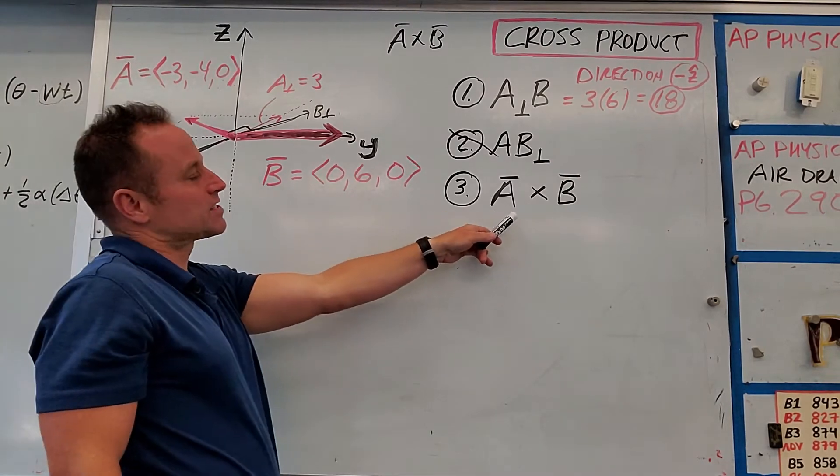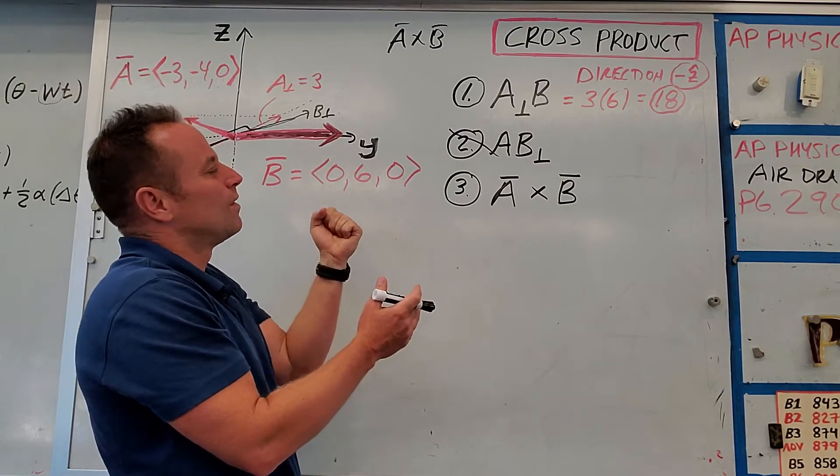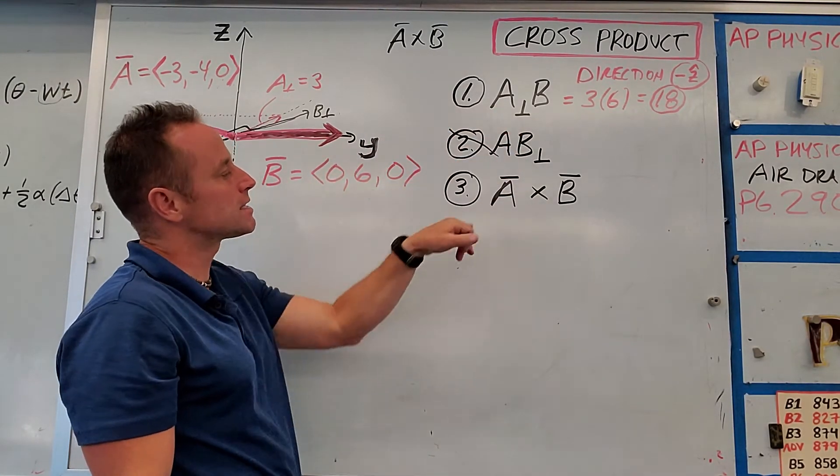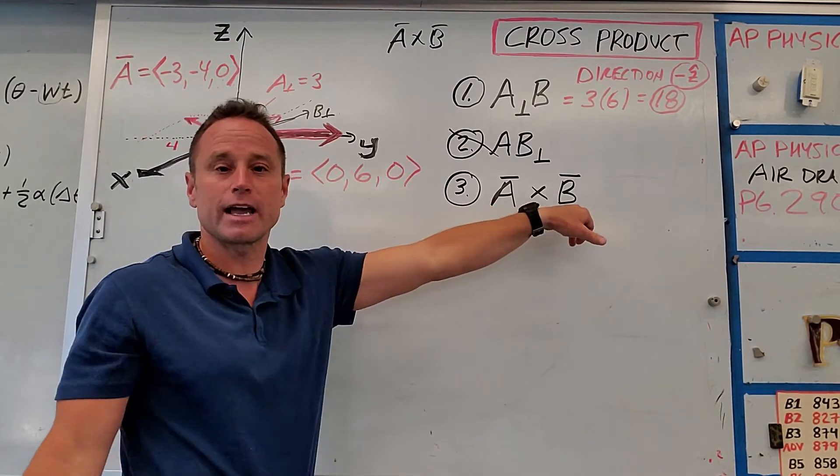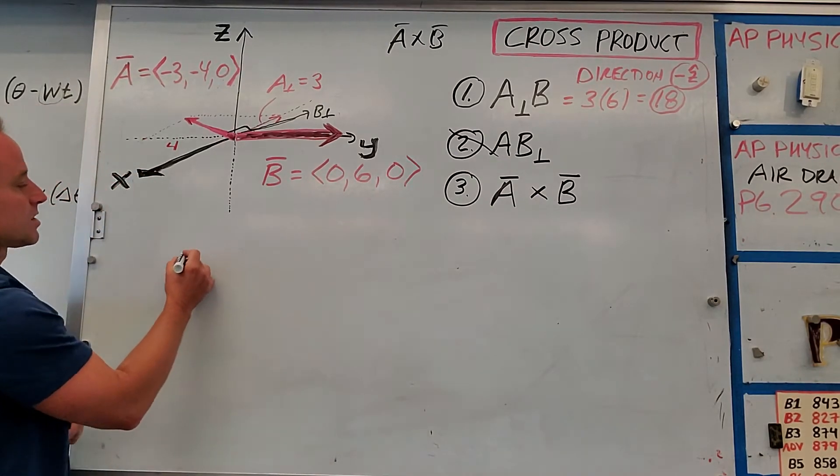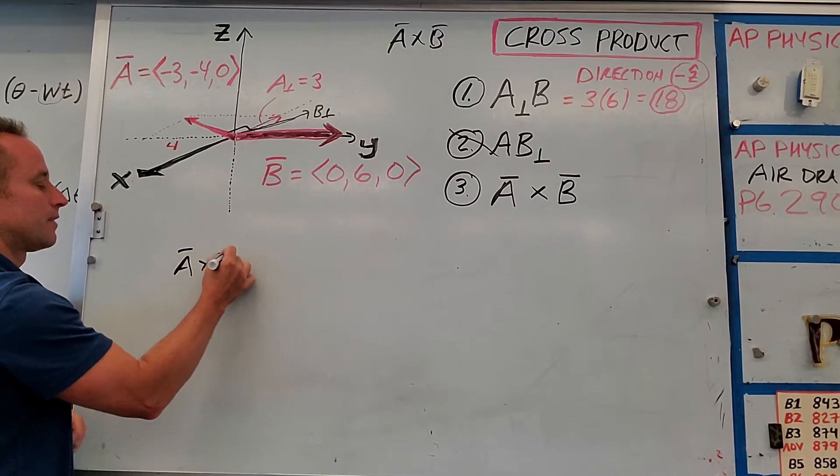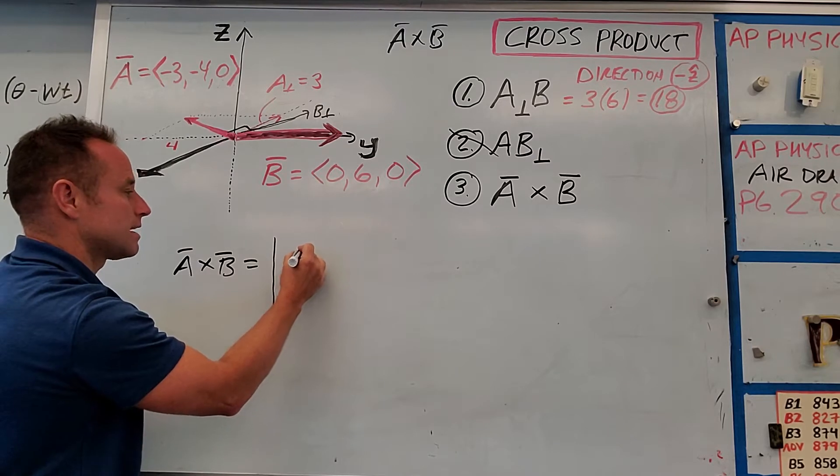Another way to do it that's kind of like brute force method, kind of a method that is your go-to if you're not able to just see the perpendicular components, is in the form of what's called a determinant. We're going to actually calculate A cross B in a brute force way. And so the way you do it is you say, okay, we're going to find A cross B equals.